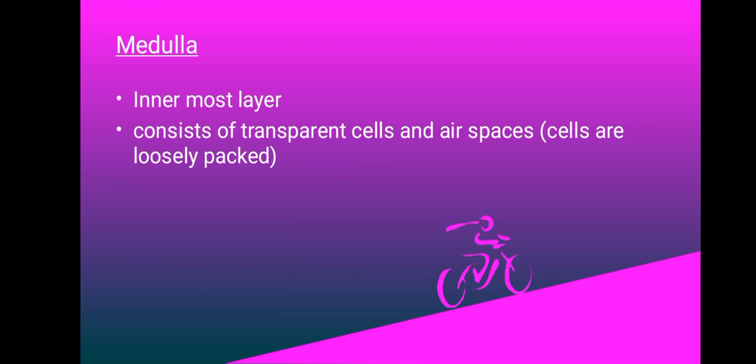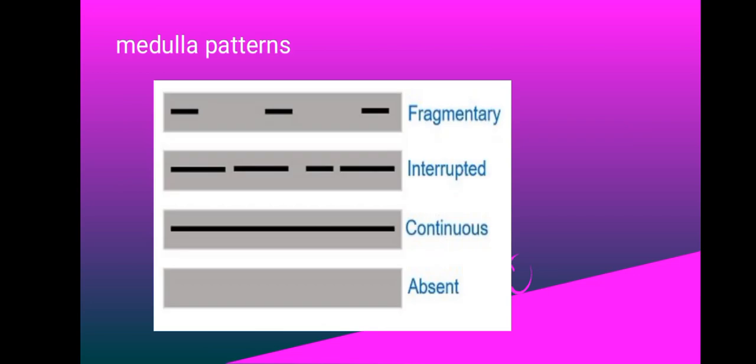Our third part is medulla. Medulla is the innermost layer. It consists of transparent cells and air spaces. The cells in the medulla are loosely packed. We have various patterns of the medulla: fragmented or fragmentary, interrupted, continuous, and absent. The difference is fragmented has huge spaces in between. Fragmentary is less continuous compared to the interrupted one.